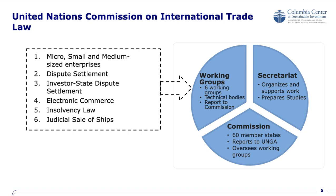UNCITRAL consists of three core branches. First, the secretariat — really the commission's staff and the driving engine of the commission's work. They prepare background papers, do research, convene meetings, and organise the work of the commission and the working groups. Second, there's the commission itself, the decision-making body of UNCITRAL. It consists of 60 member states, reports to the UN General Assembly, and oversees working groups and grants mandates to those technical working groups. Lastly, the working groups themselves — there are six working groups, which are essentially the technical bodies that receive a mandate from the commission to advance substantive issues.